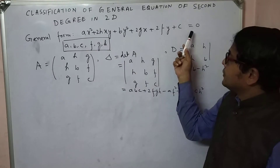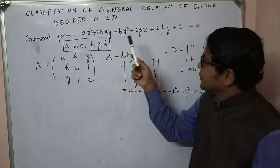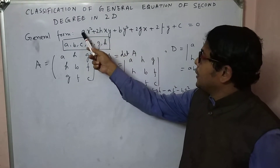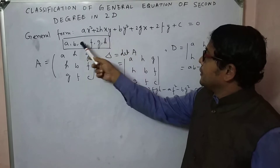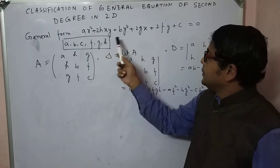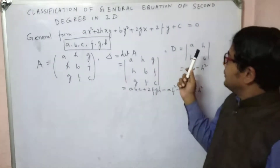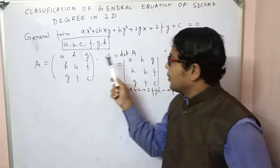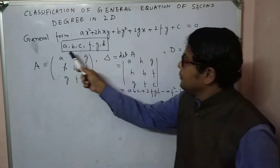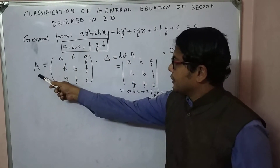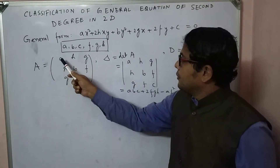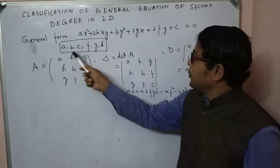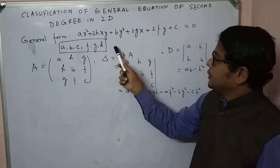This equation represents either a conic or a pair of straight lines, depending on the constant quantities A, B, C, F, G, H. To find the nature of the conic — whether it is a straight line or a pair of straight lines — we first find the symmetric matrix A: [A, H, G; H, B, F; G, F, C], formed with the coefficients A, B, C, F, G, H.